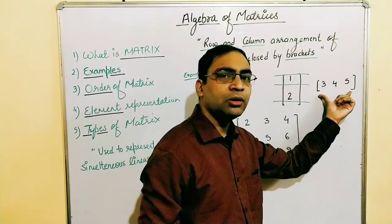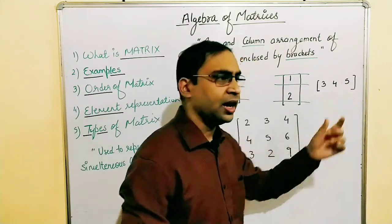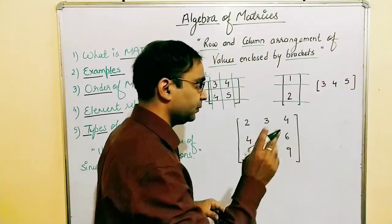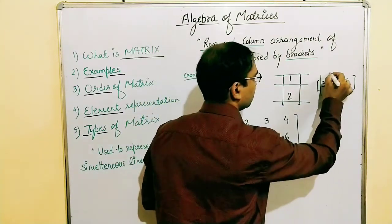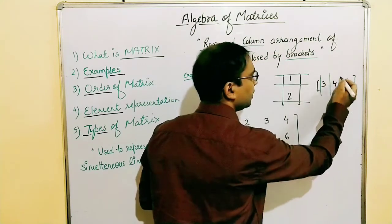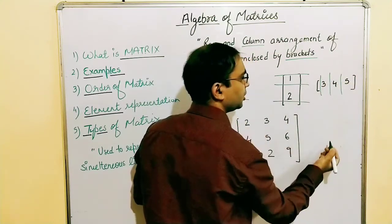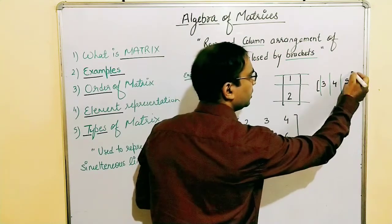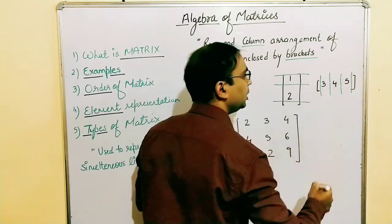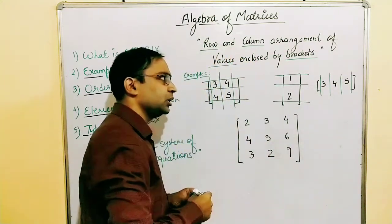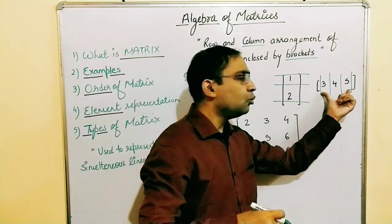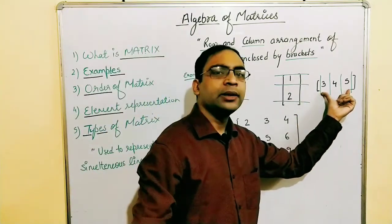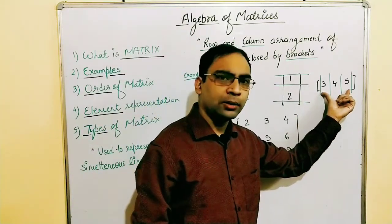Let's see another example. This is a matrix with one row and how many columns? We have three columns: column number one, column number two, and column number three. So in this matrix we have one row and three columns.